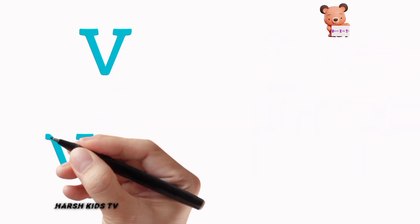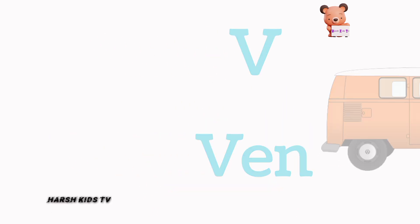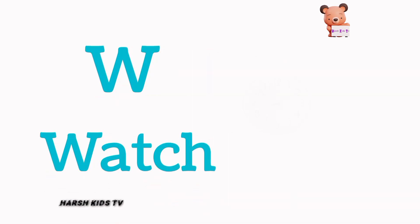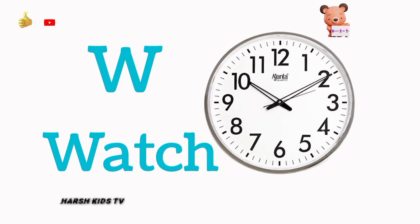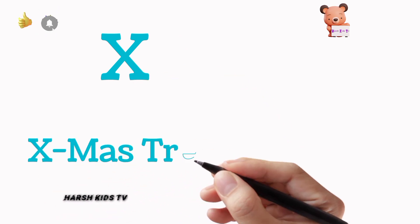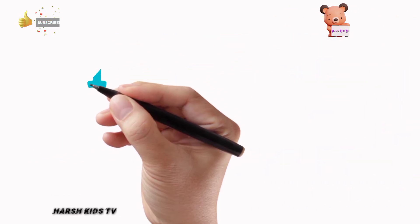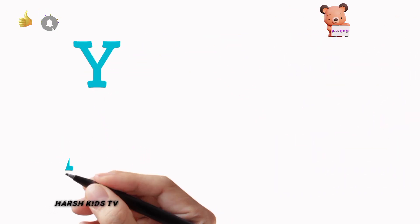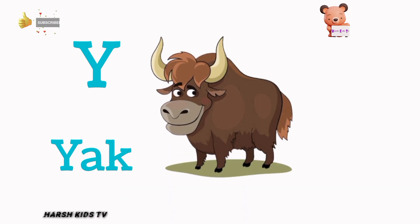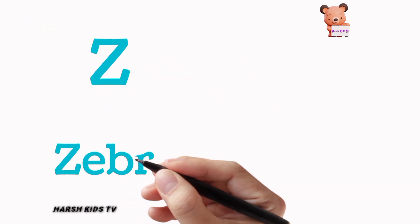V. V for Van. W. W for Watch. X. X for Existing. Y. Y for Yak. Z. Z for Zebra.